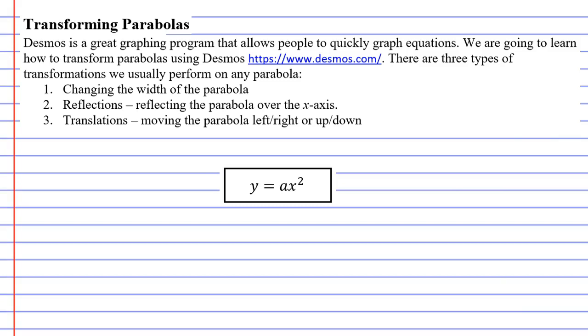Now there are three types of transformations that we usually perform on any parabola and I'm going to show you how to do the three of them. They are changing the width of the parabola, reflecting the parabola over the x-axis, and finally translations which are all about moving the parabola left, right, up or down.